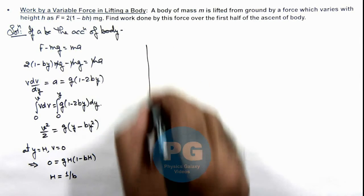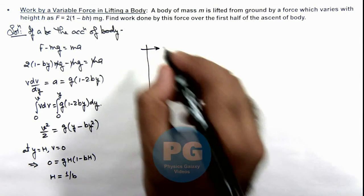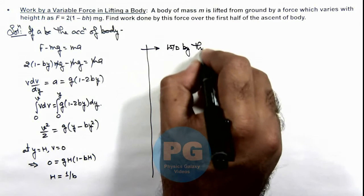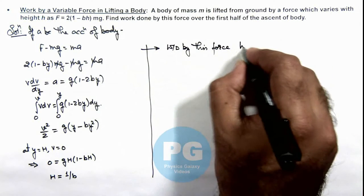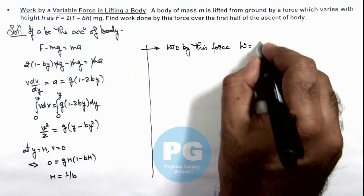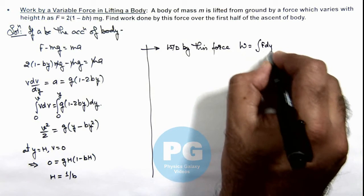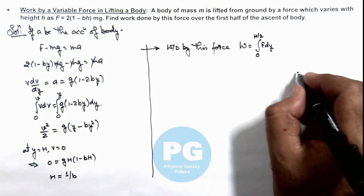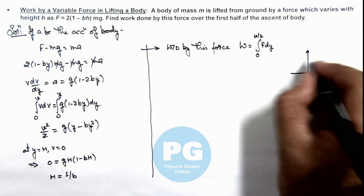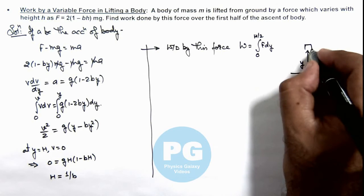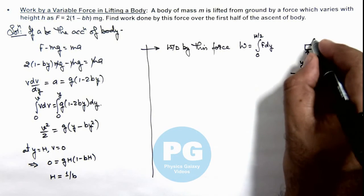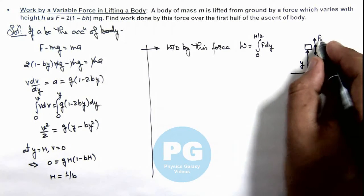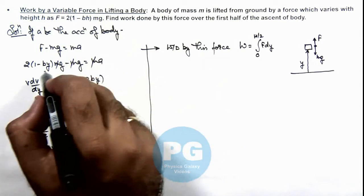And now if we continue here to calculate the work done by this force, then this work done can be written as integration of F dy from zero to h/2. Here you can see the situation this is ground, and at a height y the body is being dragged up with a force F and it is experiencing mg in downward direction and the value of F is given by this relation which we are taking here.